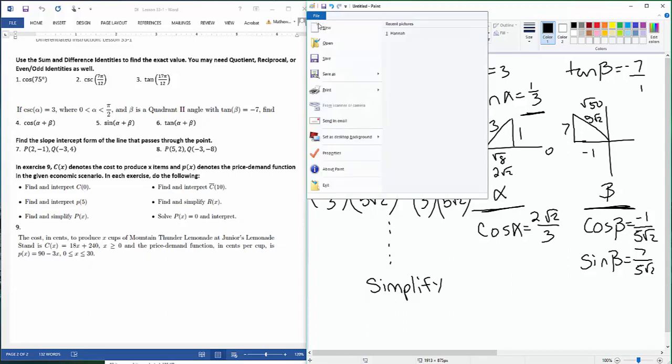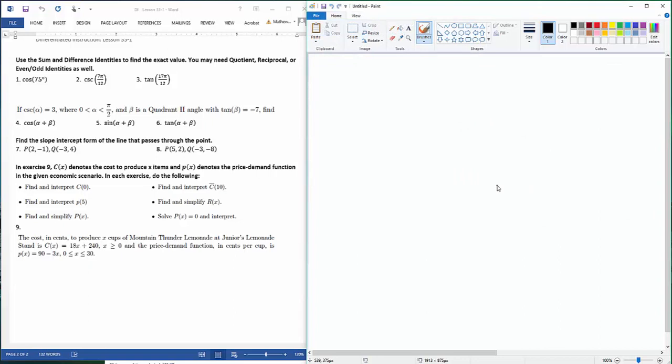Okay, moving on. Number seven. For number seven, it says find the slope intercept form of the line that passed through the points. So for us to create a line, we need two things, a point and a slope. So the first thing I should do is find my slope. So y₂ - y₁ over x₂ minus x₁. So that's going to be 5/(-5), which is negative 1.